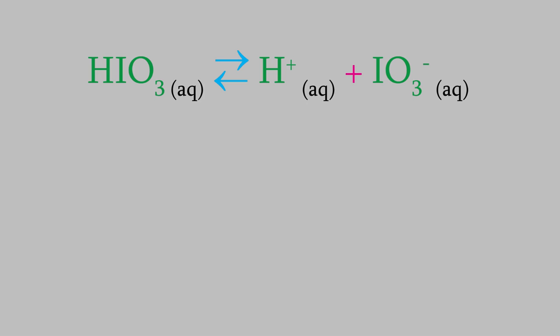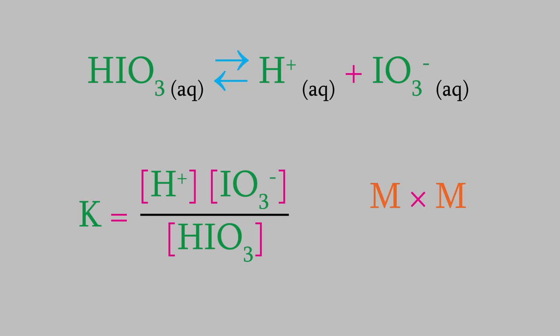For example, consider this simple chemical reaction in which aqueous iodic acid dissociates to form hydrogen ions and the iodate ion. If we write out the expression for the equilibrium constant, the concentrations all have units of molarity. That means this expression would seem to have units of molarity squared in the numerator and just molarity in the denominator, giving us units of molarity overall for the equilibrium constant. So why don't we have units for K?